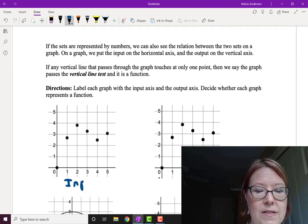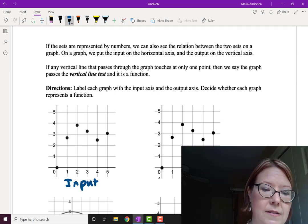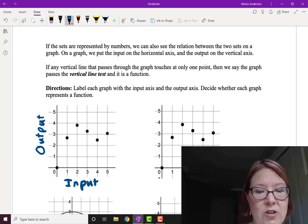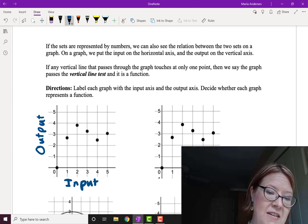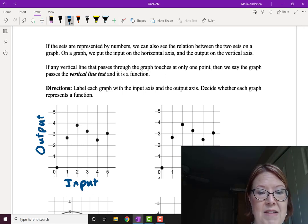The first graph is a set of points. So we have a point at 0, 0, 1, 2.7, 2, 3.8, 3, 3.2, 4, 2.5, and 5, 3.1.